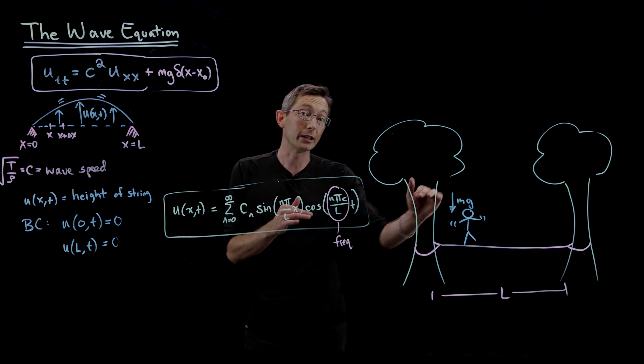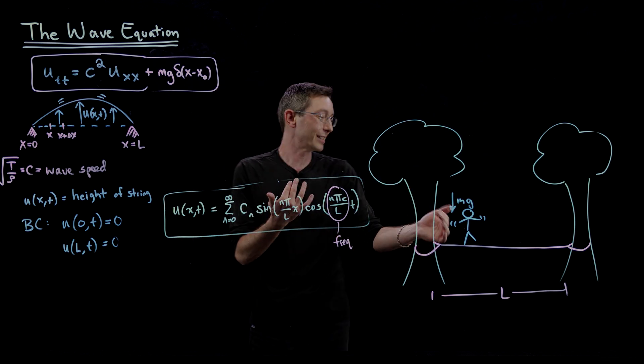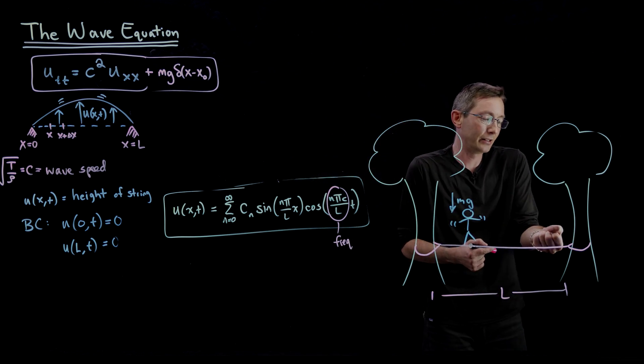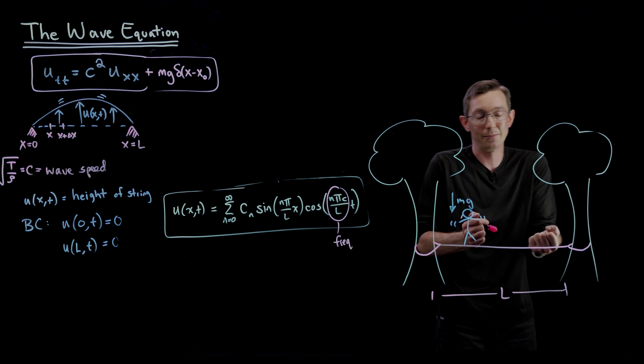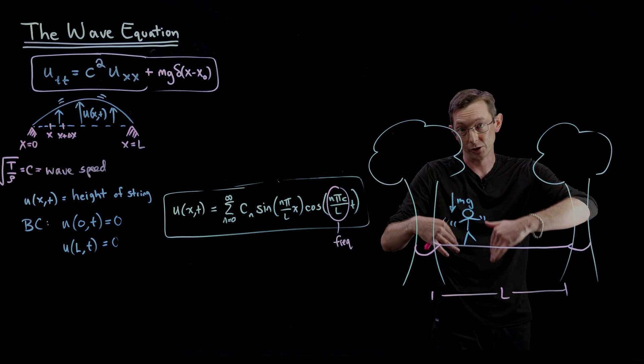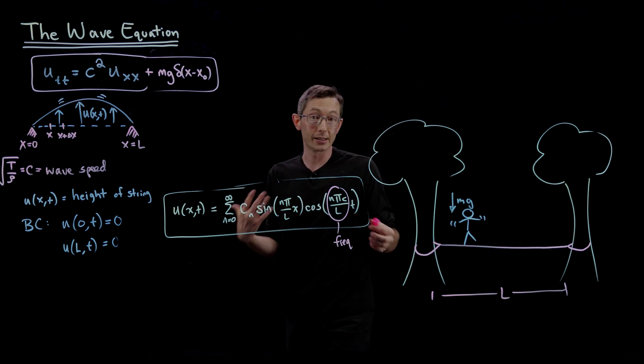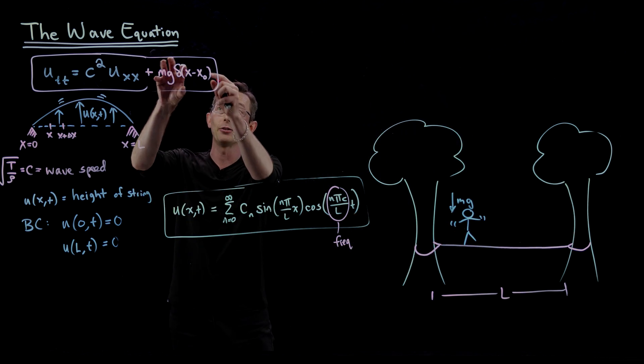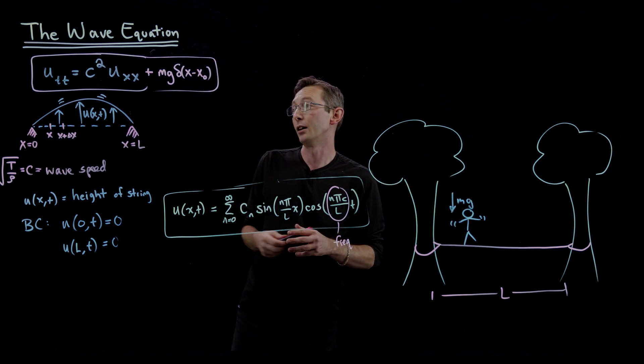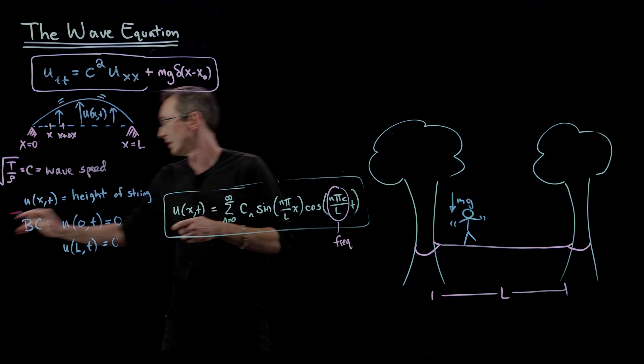We're still assuming the small angle approximation because if you've ever put one of these slacklines together, you basically use a big ratchet lever system to get this thing super duper tight so that a human can walk on it without it just sagging to the ground. So you still have that small angle approximation, but now the human is putting a massive delta forcing on this thing.